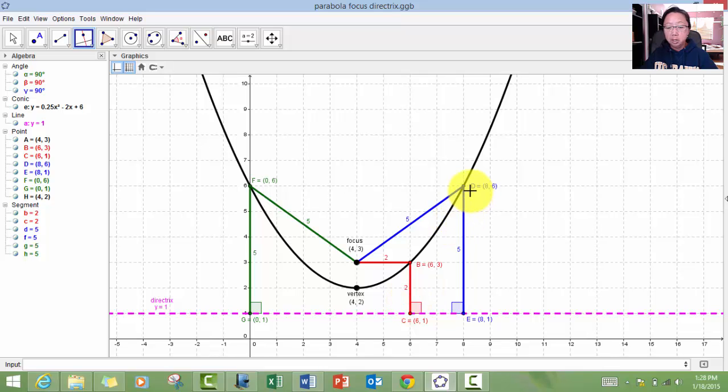For example, I choose another random point here called point D, 8, 6. When I draw a straight line down perpendicular to the directrix, I get a line segment that's equal to 5 units. Well, that line segment, same length as the one connecting D to the focus, so they're both 5 units.